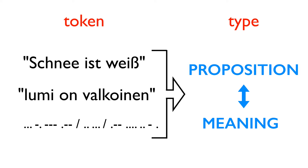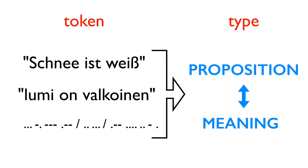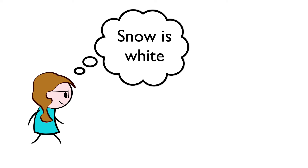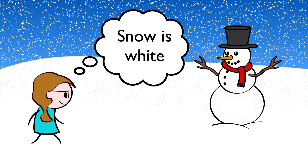We have another word to describe what all these sentences have in common: they have the same content. This is how I'm using the word 'content' when I talk about the content of a belief or mental state. If I believe that snow is white, then the content of that belief is just the meaning of the proposition being asserted by the belief — it's the proposition that snow is white.